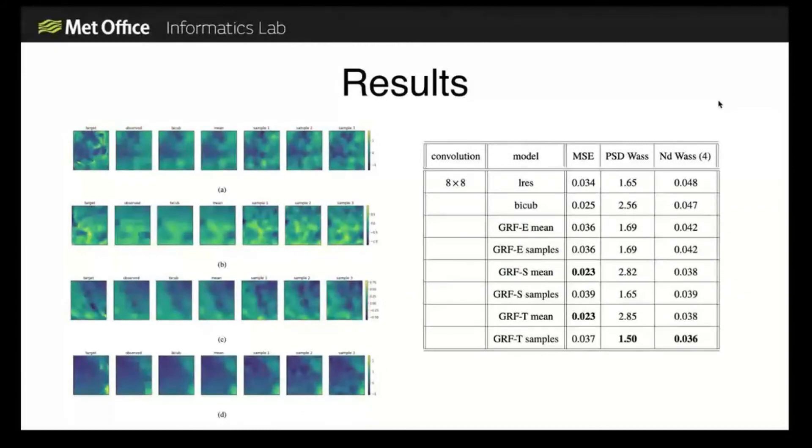In the 8x8 case, the results were pretty good. I've reported on the mean squared error - this is a point-by-point verification, which I wouldn't particularly expect it to do so well on the samples because of this problem of stochasticity. Then there's a power spectral density, which is somehow reporting the spatial structure of the field as a whole, and then a sort of intermediate metric based on neighborhoods.